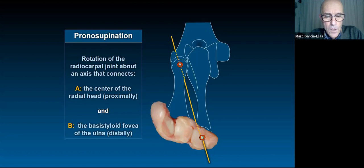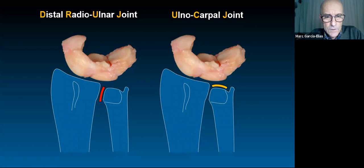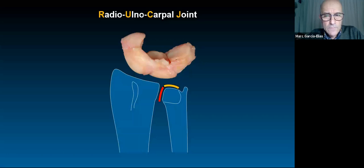During pronation-supination, not only is there friction between the distal radius and ulna at the DRUJ, but also between the ulnar head and the wrist — the ulnocarpal joint. This is like a hip joint: just as we cannot differentiate the vertical from the upper surface of the hip, we should not do so here. The distal radioulnar joint and the ulnocarpal joints are not independent articulations but two adjacent sectors of one single articulation, which should be called the radio-ulnar-carpal joint.